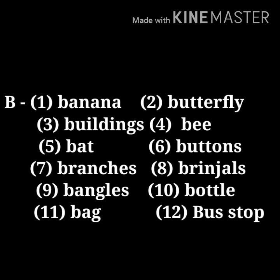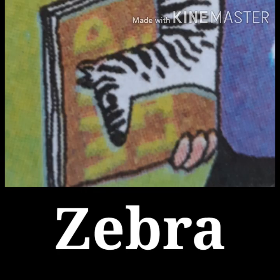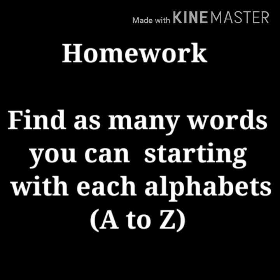Now, the last letter is Z: zebra. Do the activity in this way for each letter. Homework: find as many words as you can starting with each alphabet.